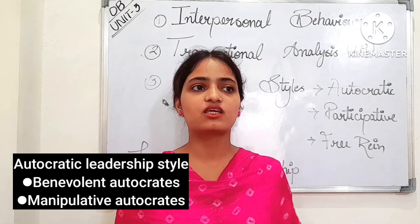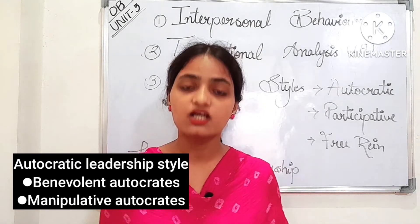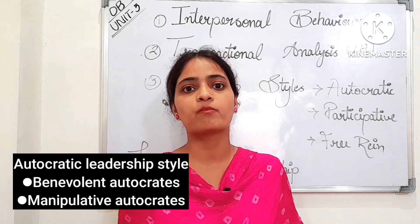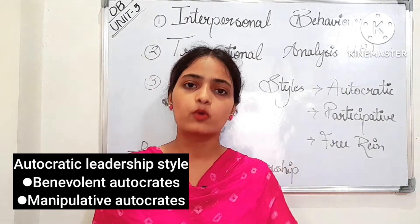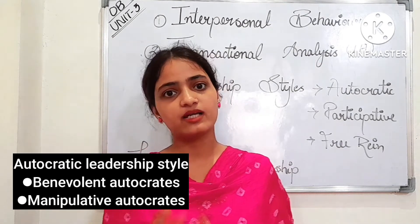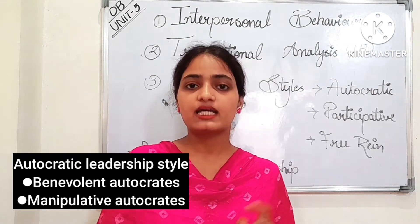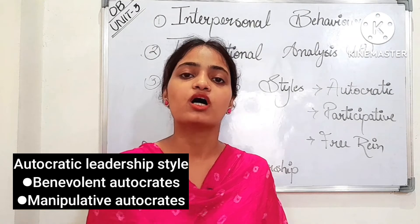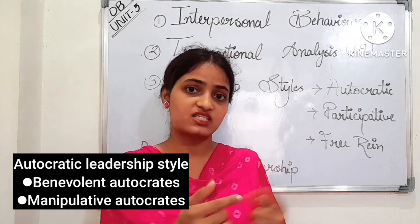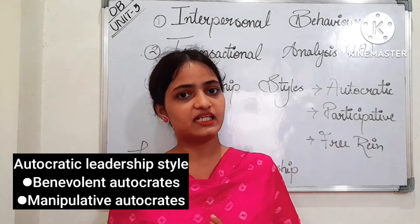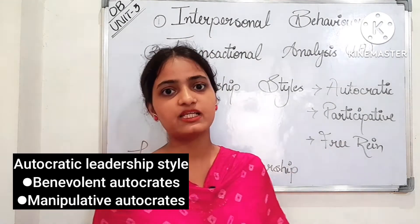Benevolent Autocratic means the dictatorship is running, but as in history, there are people who ran dictatorship and whoever took the decision took it well — that is Benevolent Autocratic. It means running a positive form of dictatorship: your IQ and EQ are so high that if you are taking the decision, your employees or group members trust it will be right. Manipulative Autocratic means you make people feel they are involved in decisions, but actually the decision is already fixed, and you manipulate them to agree. This creates pressure on employees and organizations.